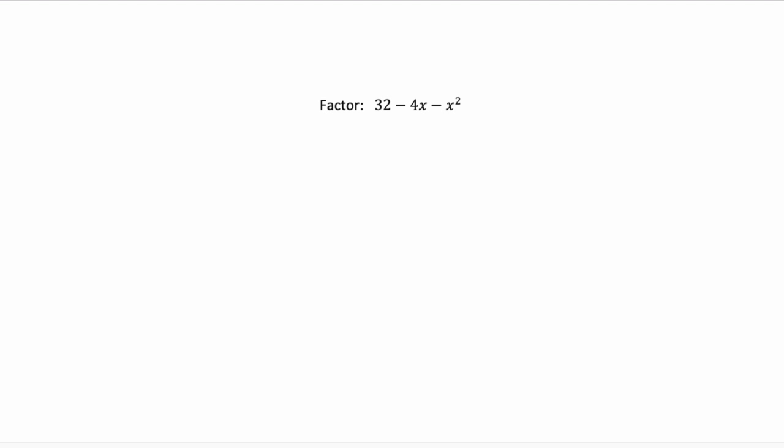It doesn't have the squared first, it's starting with the constant of 32, and also because it wants the answer in the form m plus x, n plus x. So it wants the variable x at the end, and we're used to dealing with things as x squared plus bx plus c.